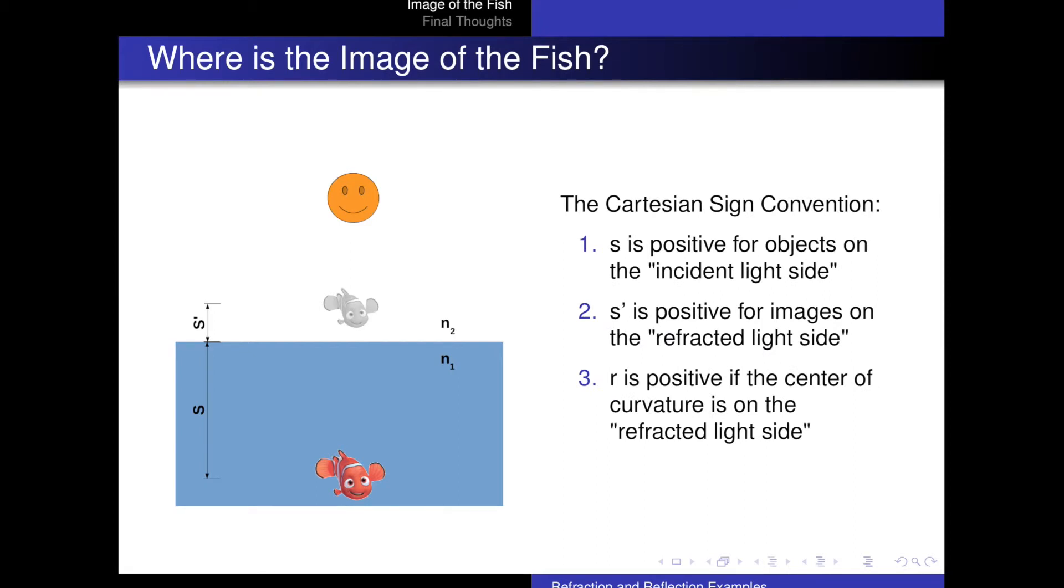s is positive for objects on the incident light side. The incident light side is where the light comes from. s prime is positive for images on the refracted light side. Refracted light side is where light is going to. And r is positive if the center of curvature is on the refracted light side.